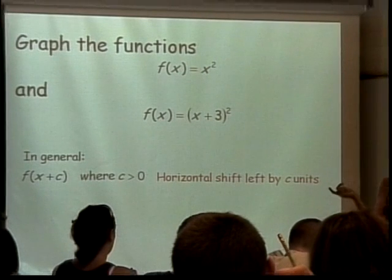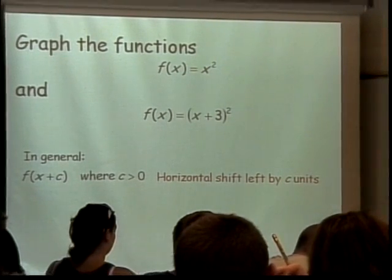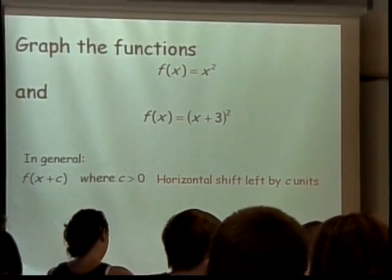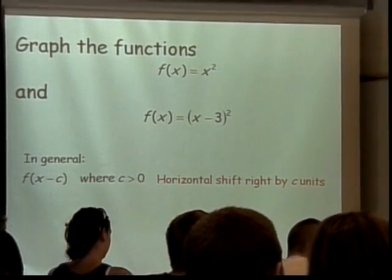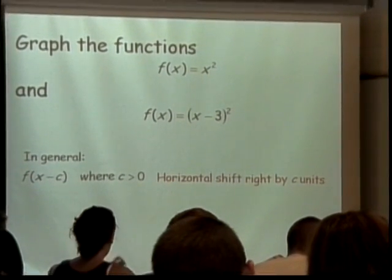So what do you think minus must do? Move you right. So if you have an x minus 3 quantity squared, then you're going to have a horizontal shift to the right.